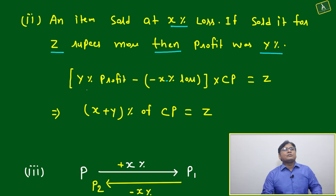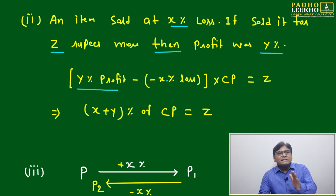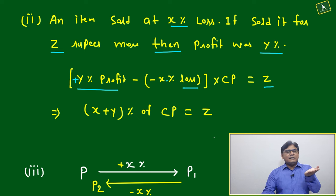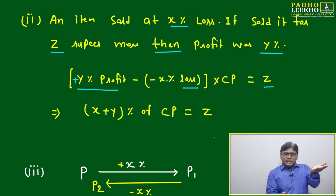Then how? Just will try to understand mathematically. Y percent profit minus x percent loss, why it is minus? Because it is loss. It is plus because it is profit, into cost price equal to z. That only we are telling: if z you are increasing, then what is happening? You increase your selling price by z rupees. Your loss earlier was x percent, now it is coming to y percent profit.